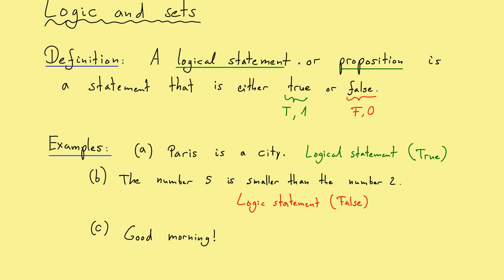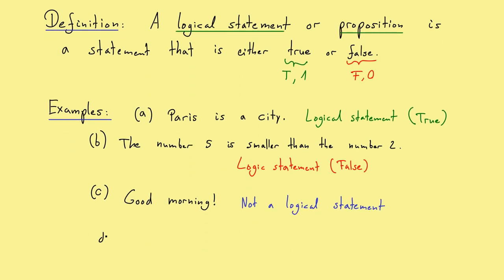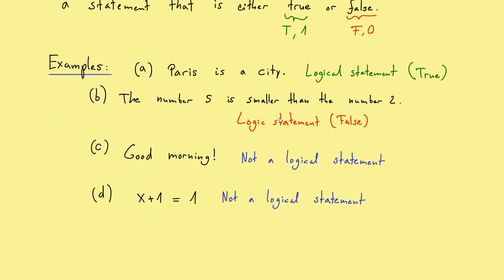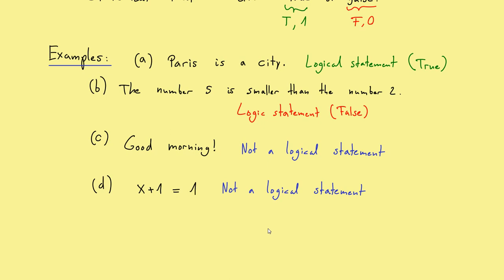Next example, good morning. Very nice, but of course it has no truth value, so this is not a logical statement. Next one, x plus 1 is equal to 1. This one might be tricky. It seems like a sensible statement, but as you can see, it doesn't have a well-defined truth value. It depends on x. If x is 0, this will be a true statement, and if x is, for example, minus 1, it would be a false statement. Therefore, in short, it is not a logical statement, but it is very close.